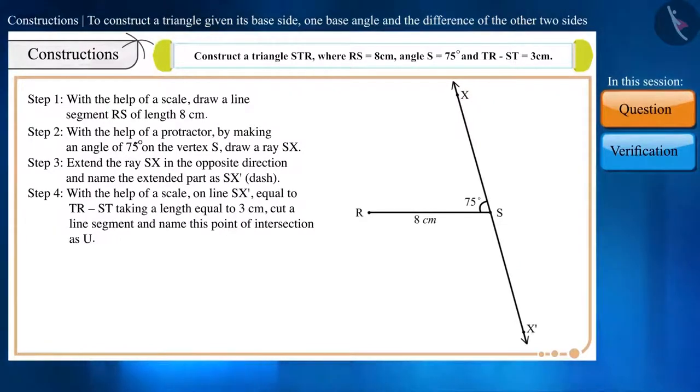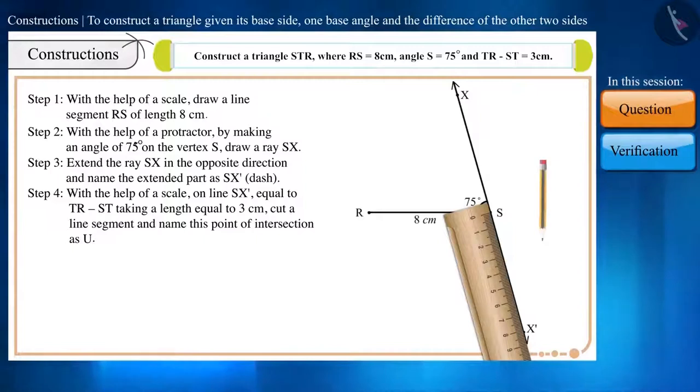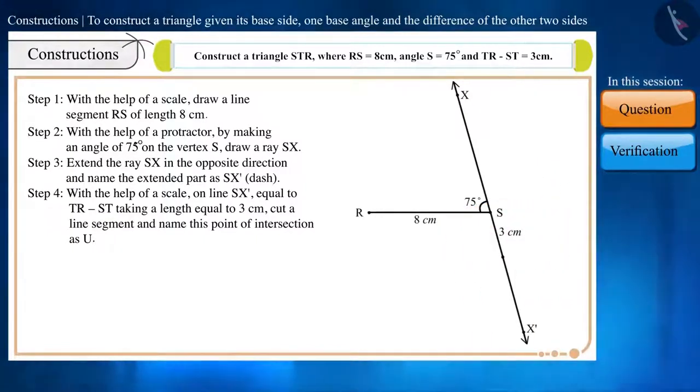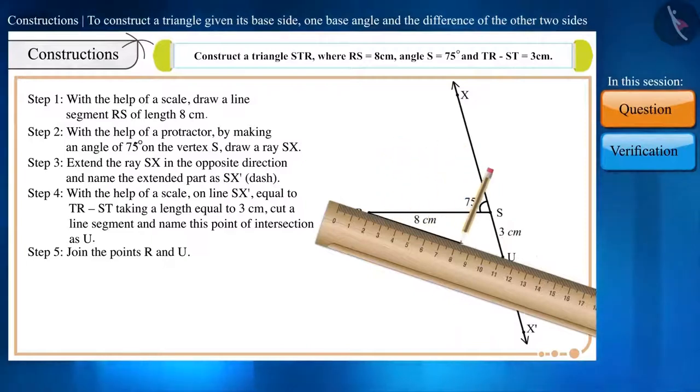Step 4. With the help of a scale, on line SX dash equal to TR minus ST, taking a length equal to 3 cm, cut a line segment and name this point of intersection as U. Step 5. Join the points R and U.